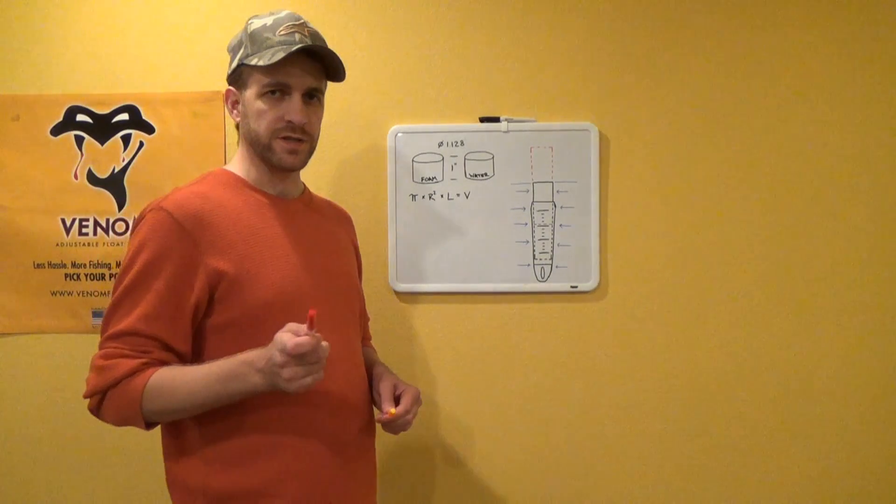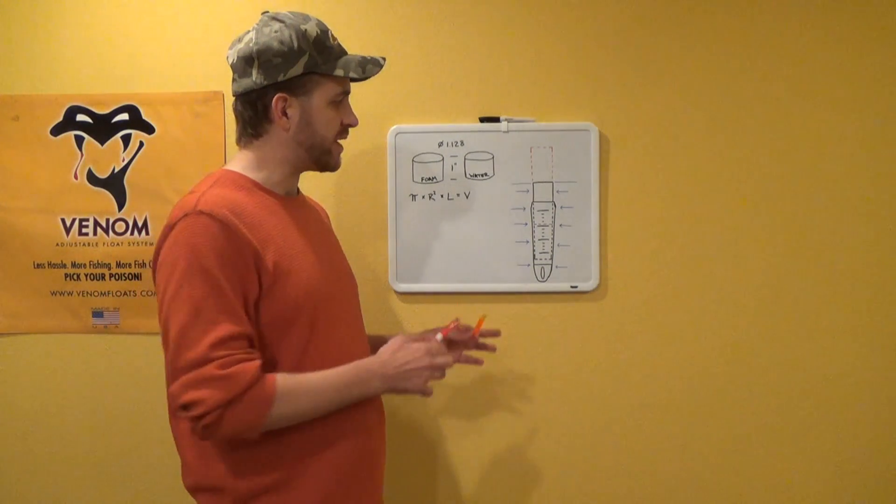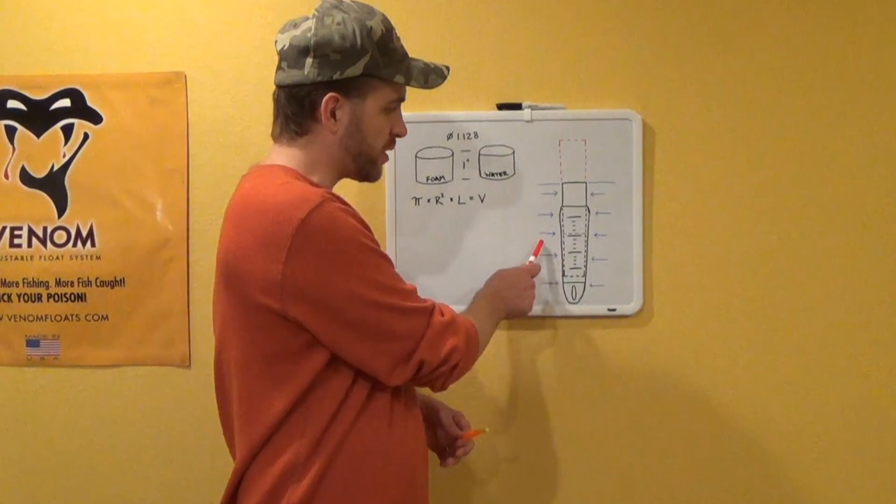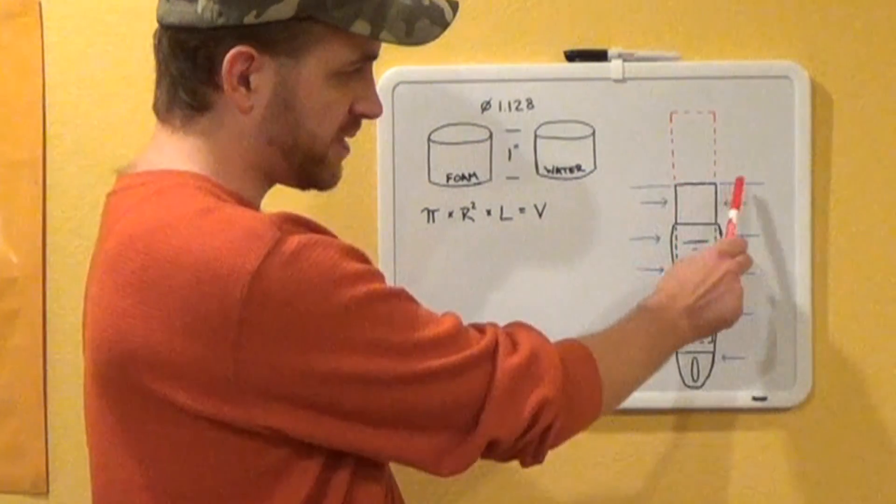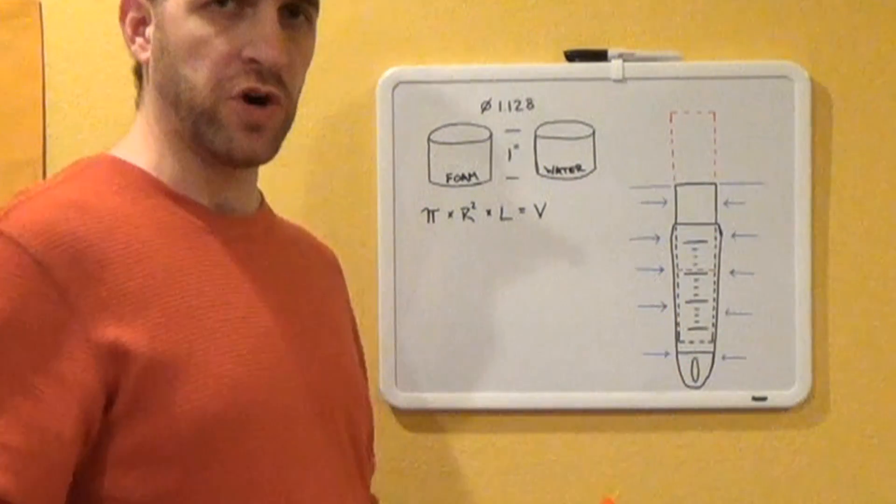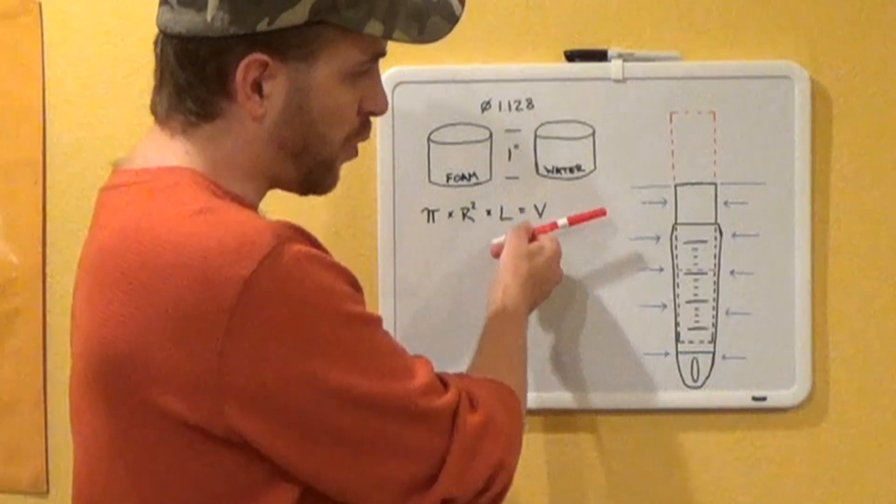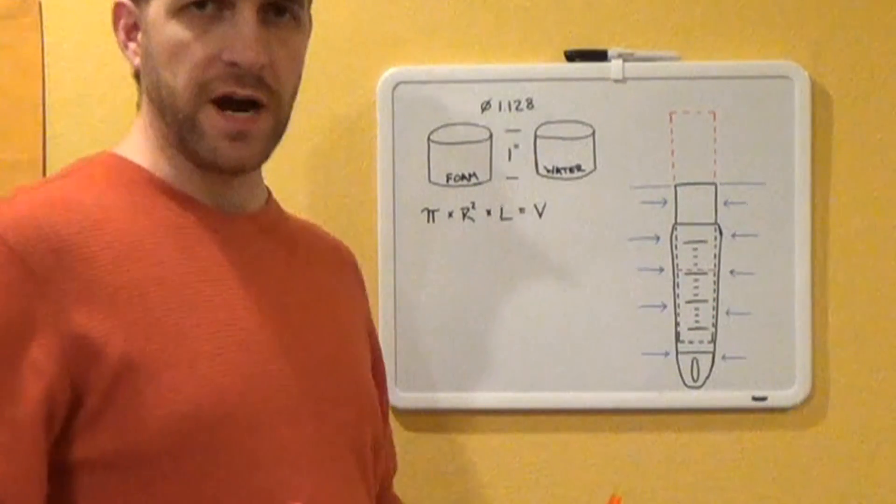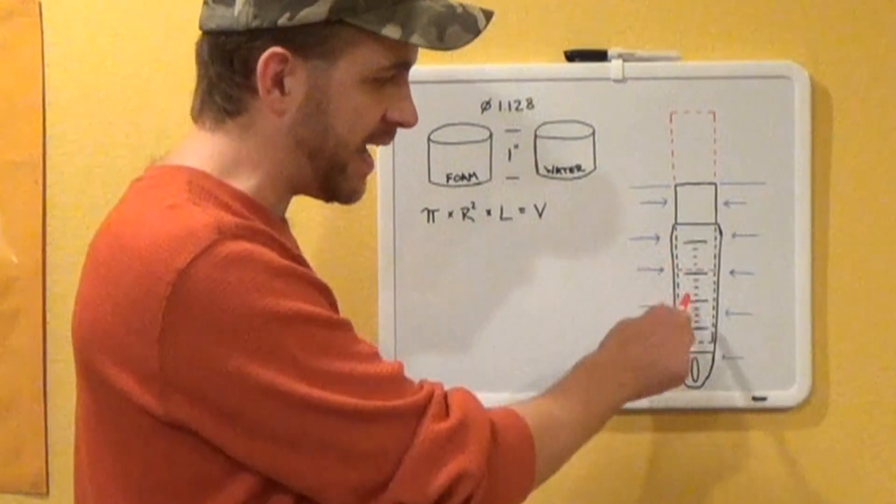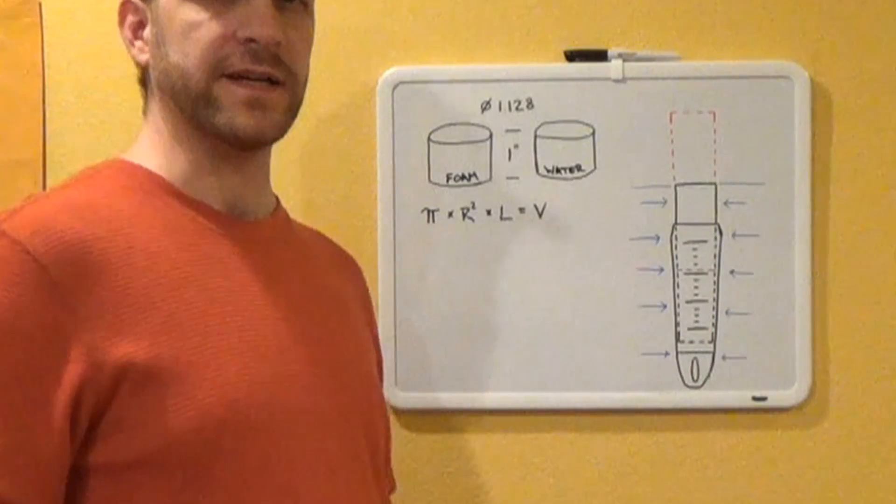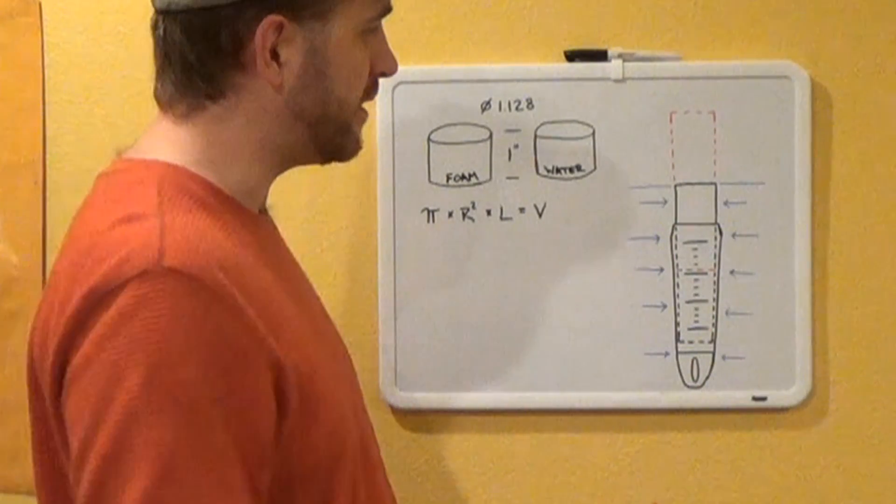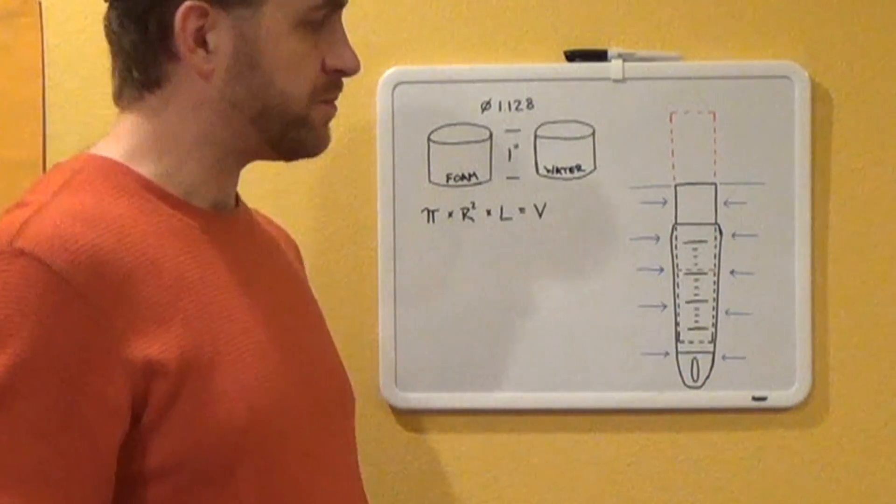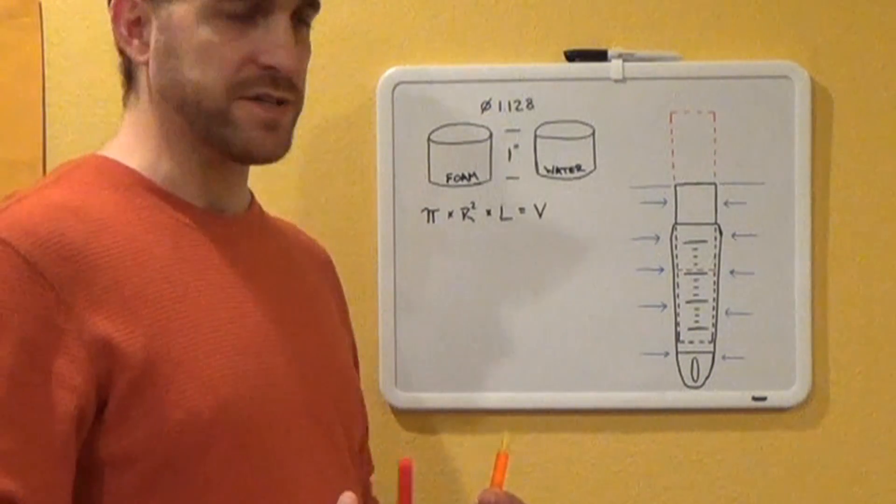Alright guys, let's take what we learned just a moment ago and apply that to the Venom floats and talk about why they're truly adjustable. In this drawing that we have here on the whiteboard, we've got our water level even with the top of the foam insert. So it's at about neutral buoyancy. The water itself is only able to see the outside surface areas of the bobber. So we're hiding some of our foam volume down inside the lower body so the water doesn't get displaced by that volume.